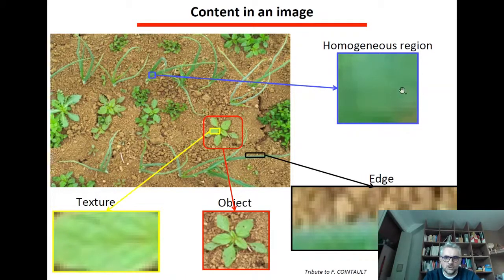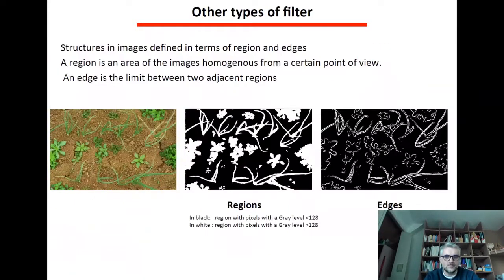For instance we have homogeneous regions like this part of the leaf here. We can have also textures, so grainy appearance structure. We can also have objects or also we can have edges like here. So we're going to see types of filters which are specially dedicated to enhancing regions or enhancing edges of interest. So the structures in images are defined in terms of region and edges. A region is an area of the image homogeneous from a certain point of view and an edge is the limit between two adjacent regions.